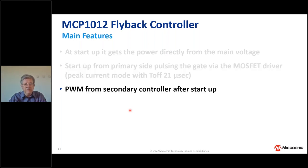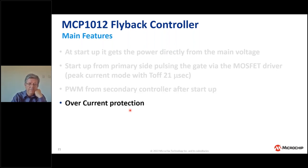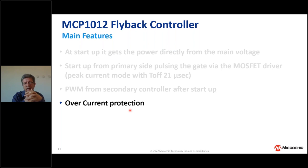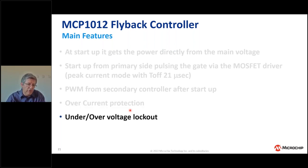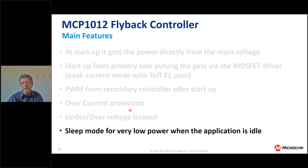Once the secondary side starts to be supplied, it can take control of the output and generate a PWM sent to the primary. During normal operation, the current limit on the primary is still in place with a different threshold to protect the circuit against overcurrent — if the current goes above a specific threshold, the on-time is terminated. The circuit also has over-voltage and under-voltage lockout protection, and there is a way to put the circuit in sleep mode to reduce input power.